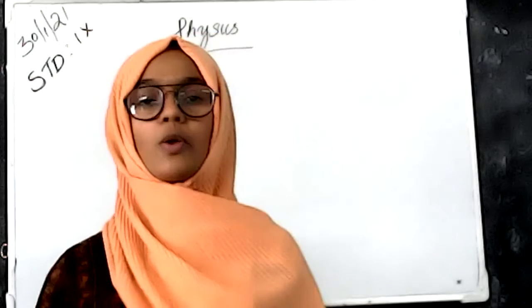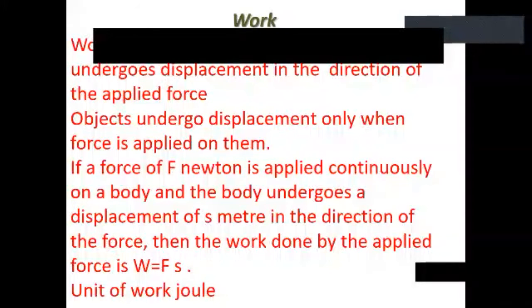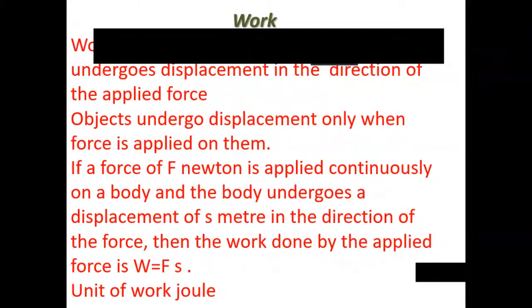From the slide: work is said to be done only when a body undergoes a displacement in the direction of the applied force. If a force of F is applied continuously on a body and the body undergoes a displacement of S meters in the direction of the force, then the work done is W = F × S.